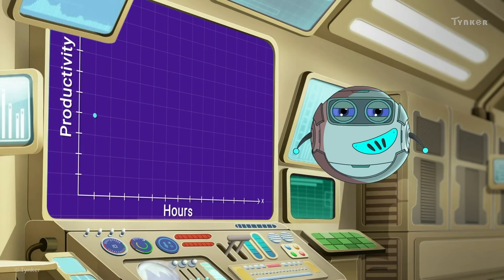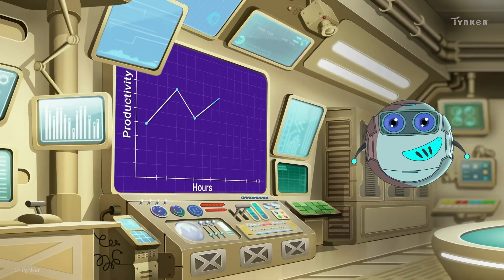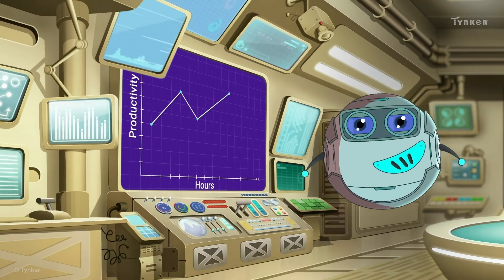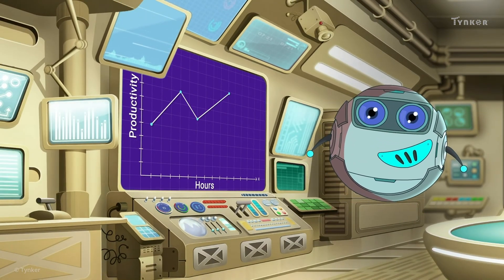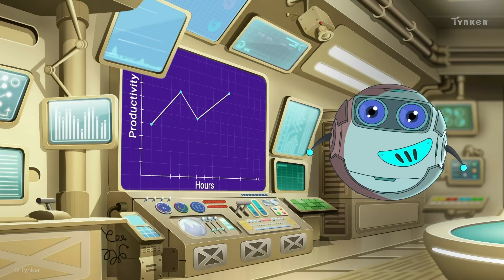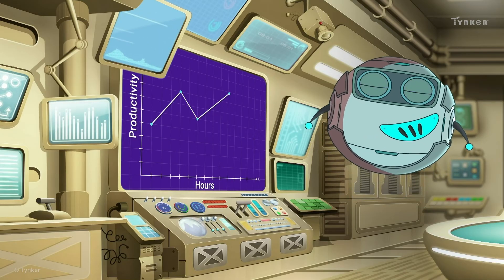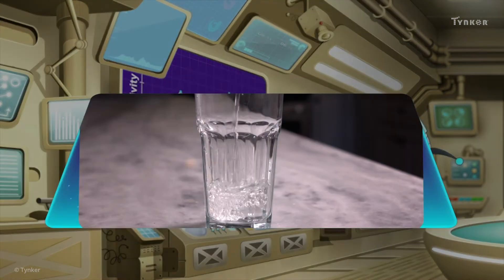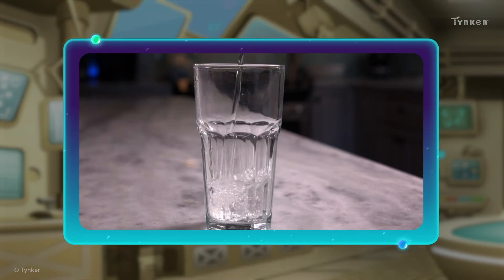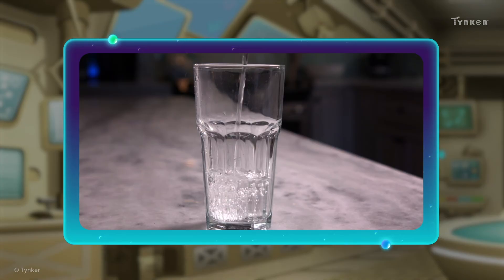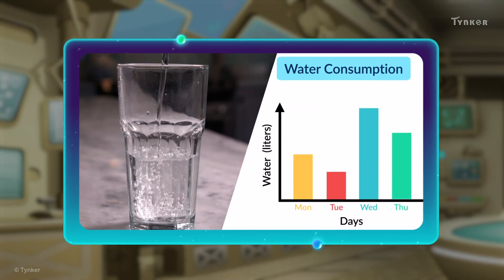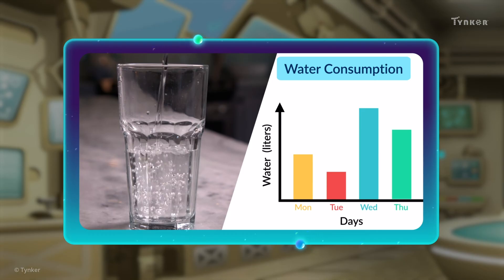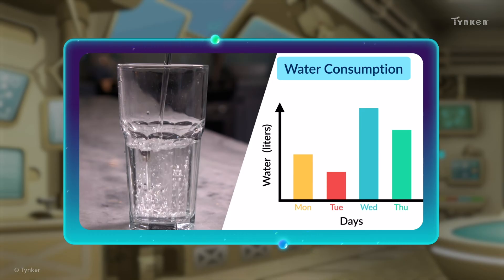Hey there. I'm measuring the daily performance of the minions with a line graph to see how well they are working. Here's a fun activity for you: keep track of how many glasses of water you drink every day for a week, then plot a bar graph of the data to see if you're drinking enough water.